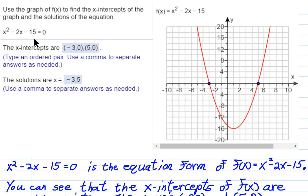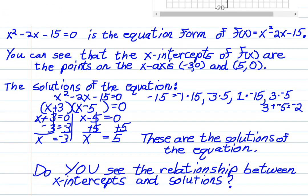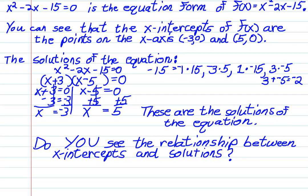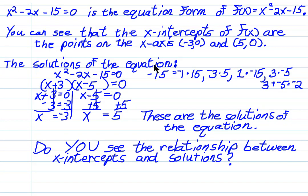Now if you solve that equation, what you discover right here is that x² - 2x - 15 = 0 can be factored like this.